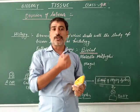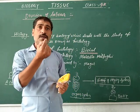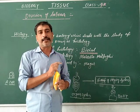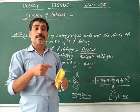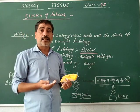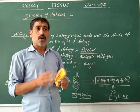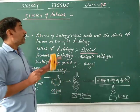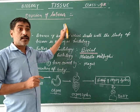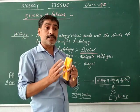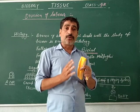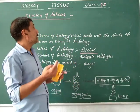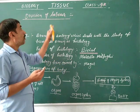Amoeba and paramecium are unicellular — all life processes are performed by one cell. A single cell performs respiration, digestion, excretion, reproduction — all these life processes are carried out by the single cell. But in the case of multicellular animals, a particular group of cells performs a specific function.